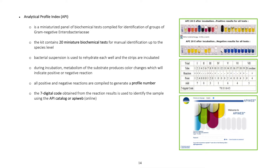Analytical Profile Index API is a miniaturized panel of biochemical tests compiled for identification of groups of gram-negative bacteria. The kit contains 20 miniature biochemical tests for manual identification up to the species level.